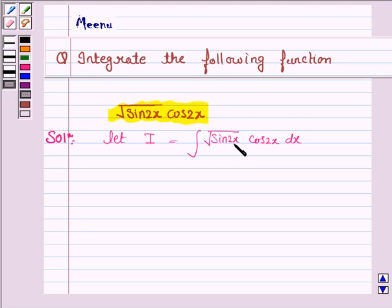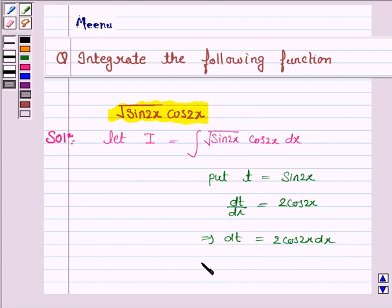So put t equal to sin 2x. So dt by dx is equal to 2 cos 2x and this implies dt is equal to 2 cos 2x dx.